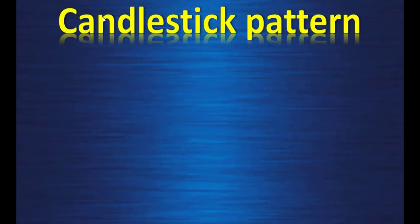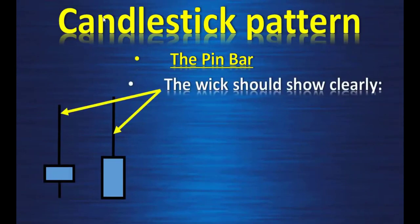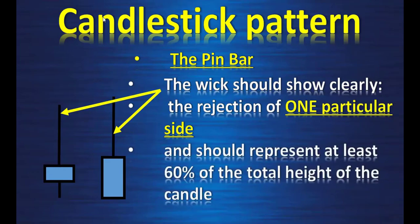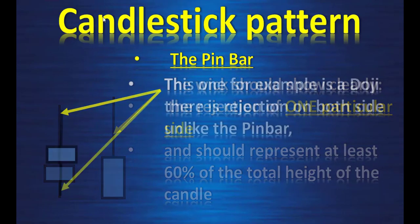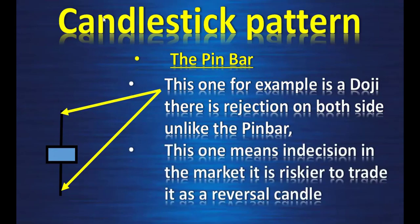Candlestick pattern number one: the pin bar. The wicks should show clearly the rejection of one particular side, not both, and should represent at least 60% of the total height of the candle. This particular candle — the doji — has rejection on both sides, unlike the pin bar. This means indecision in the market, making it riskier to trade as a reversal candle.